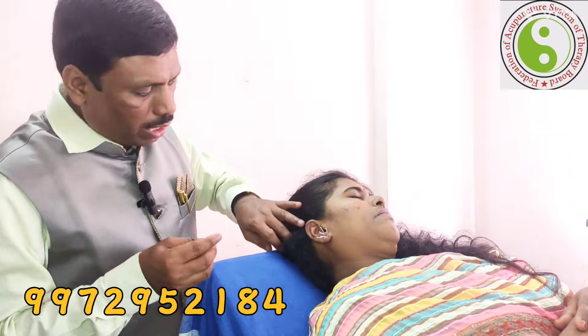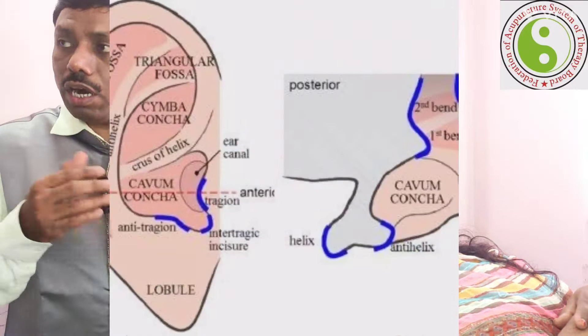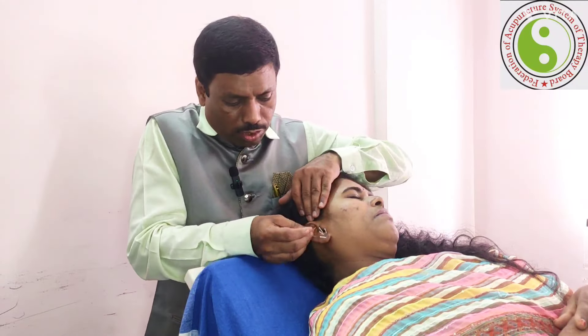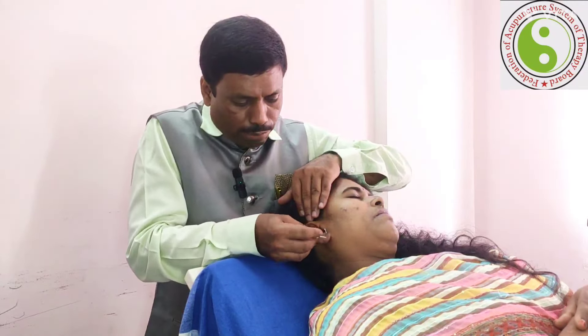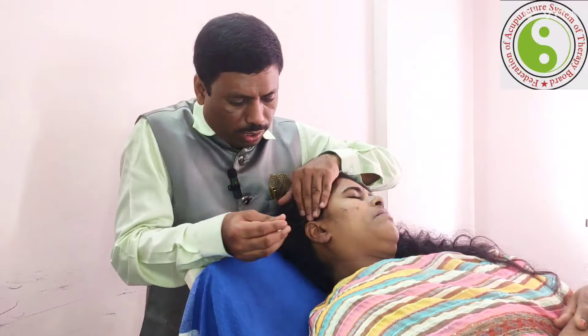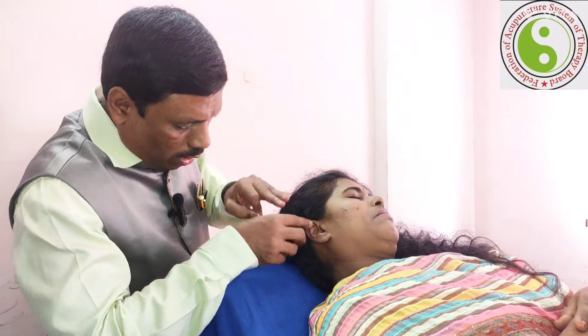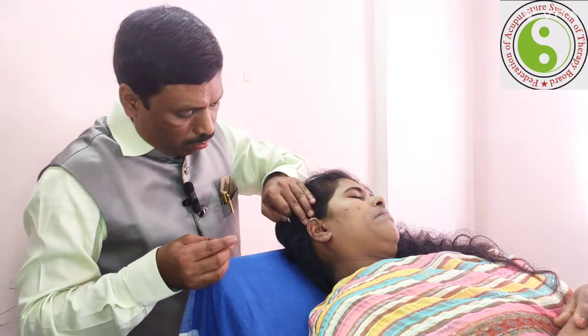Further, we are coming to the inferior level — that is the inferior concha and then cymba concha — where we will see organ-related disorders. First, let me take out these needles, and then we look into the cavam concha and cymba concha. Inside the hollow depression of the ear, all the internal organs are located. Now let me go through them one by one.